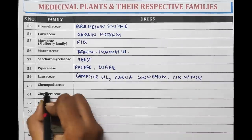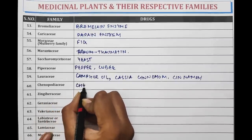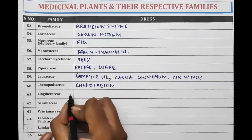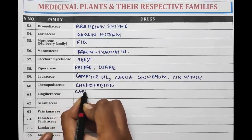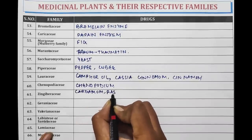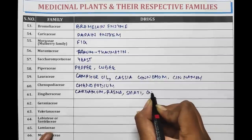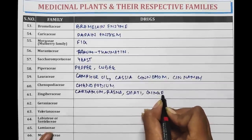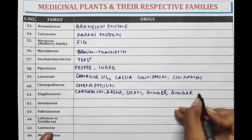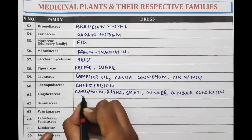Chenopodiaceae is the family of Chenopodium. Zingiberaceae is the family of Cardamom, Rasna, Shati, Ginger, Ginger Oleoresin, and Haridra (Turmeric).